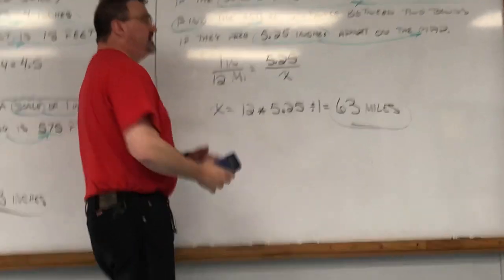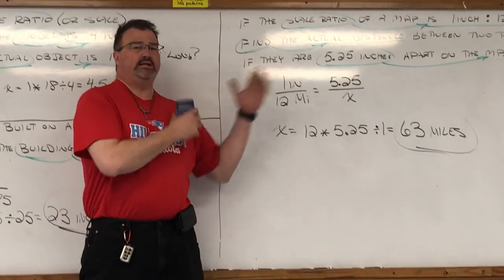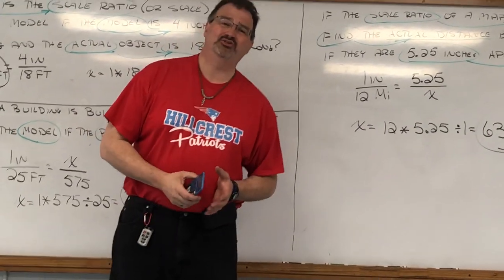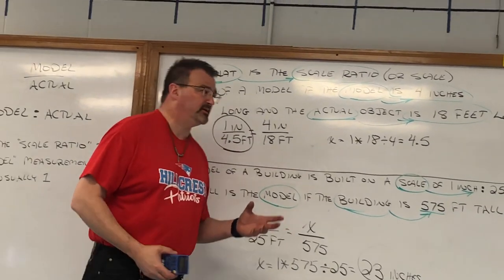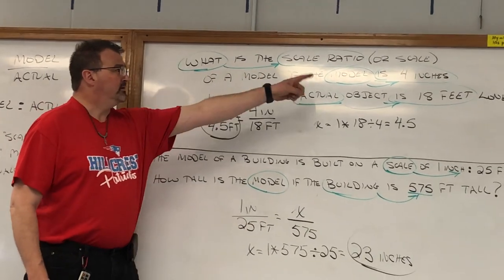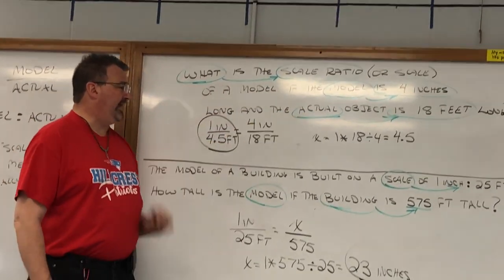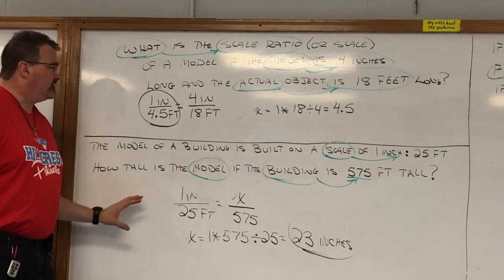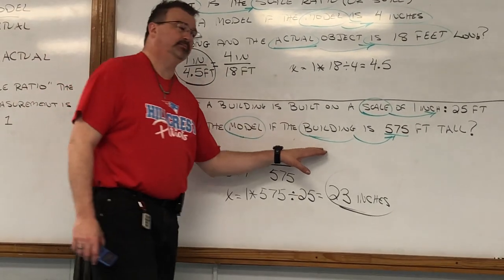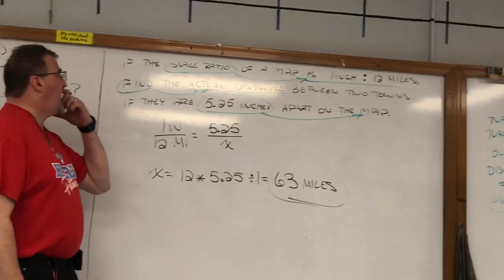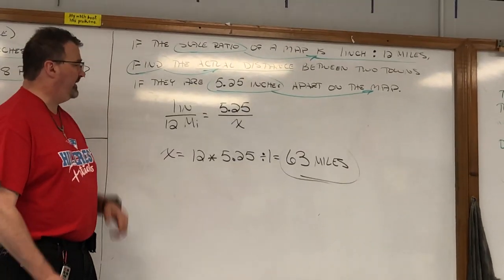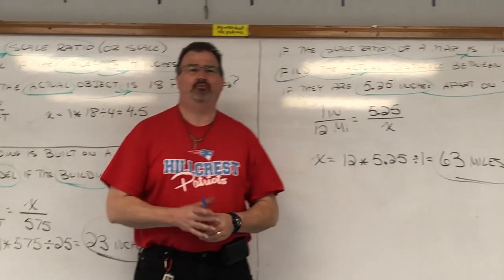So again, scale ratio — there are three types of problems. All you have to remember is that the model measurement goes on top of the matching or corresponding actual measurement. You can find the scale ratio if you're given corresponding measurements from the model and actual. You can find how big the model is if you're given the scale ratio and the actual size. And you can find the actual size if you're given the scale ratio and a model measurement. I hope this is helpful — we'll see you next time.